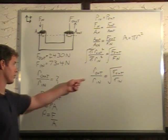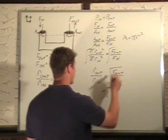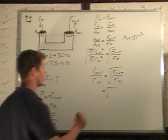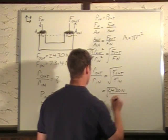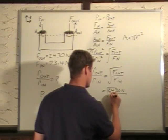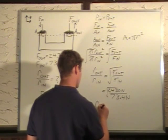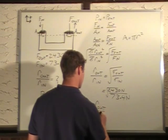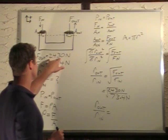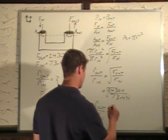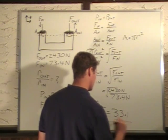R_out over R_in is what we're looking for, so all we need to do is plug in our numbers here. So force out is 2,430 newtons divided by the input force of 73.4 newtons. So that will give us a final answer, rounded to three significant digits. This is 3, this is 3. This trailing 0 doesn't count. And we round it to 5.76. No units because that's the ratio.